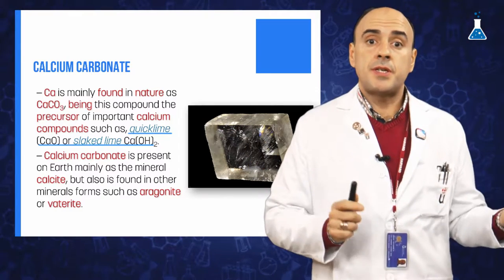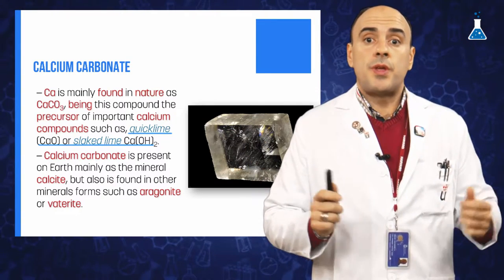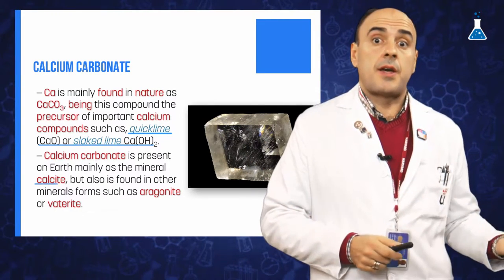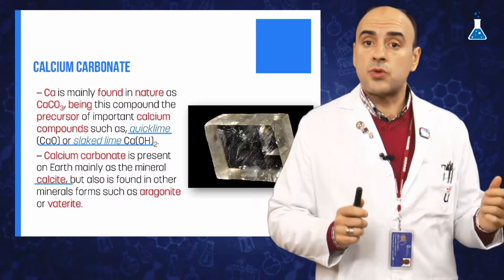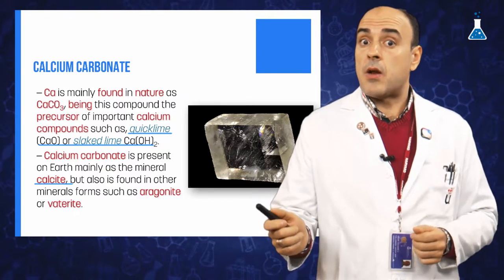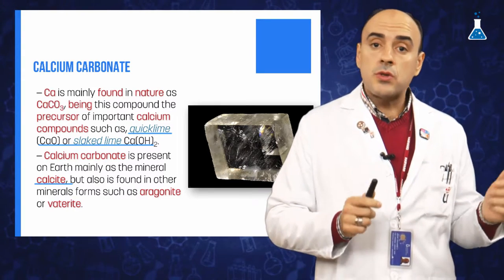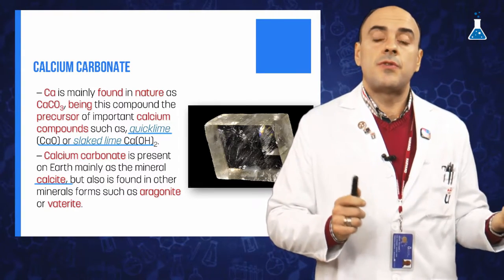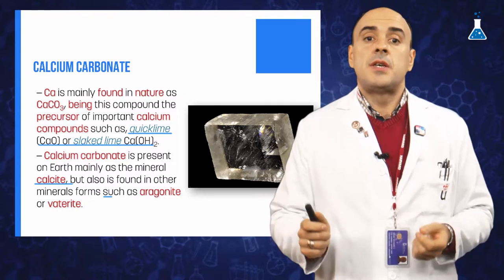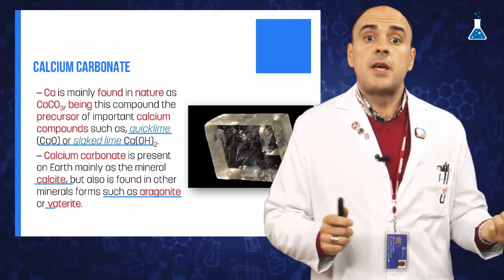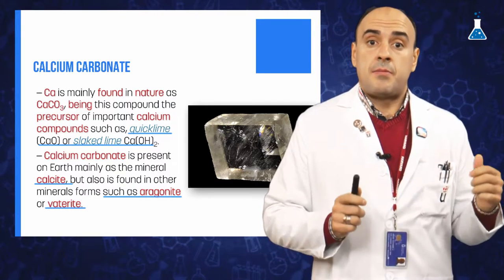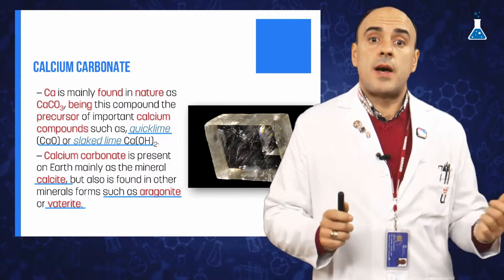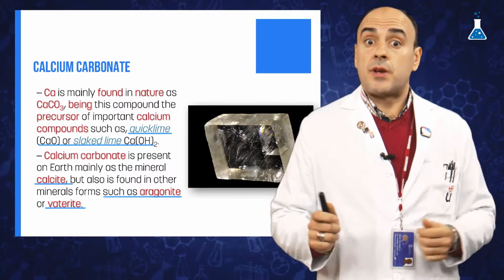It is present throughout the Earth's crust as calcite, which is the second most common mineral, although it also exists in other varieties of minerals such as aragonite and vaterite, the latter being a very rare form.